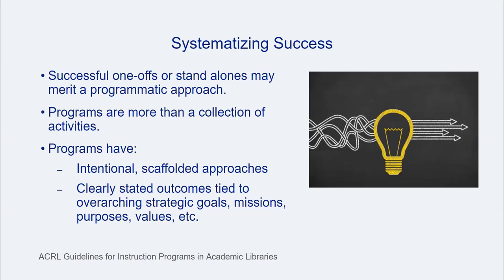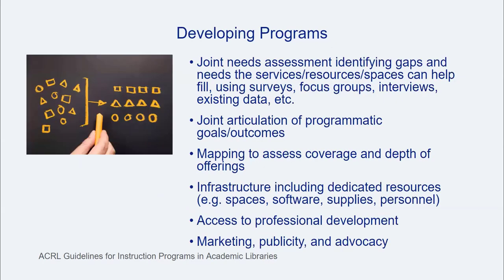With clearly stated outcomes and assessment results that provide context and detail on successful factors, innovating from a single service, resource, or space to a more programmatic set of offerings may help move from individual outcomes to long-term impact. Should a move to a programmatic approach be the next step, a few steps are likely to follow — including a joint needs assessment identifying gaps and needs, joint articulation of programmatic outcomes, mapping of the coverage or depth of envisioned offerings, and anticipation of infrastructure, training, and communication strategies necessary for innovating from an isolated library offering to a broader program.